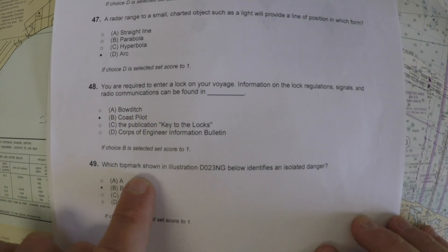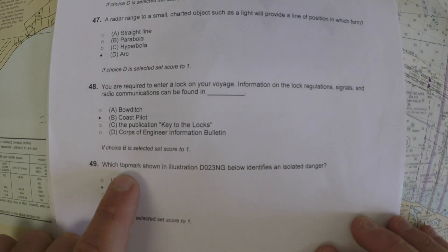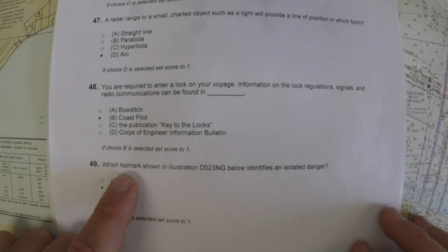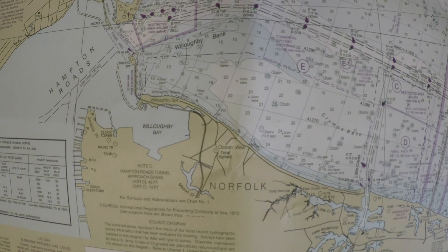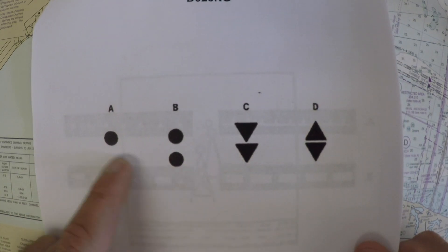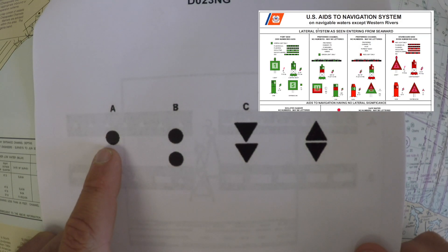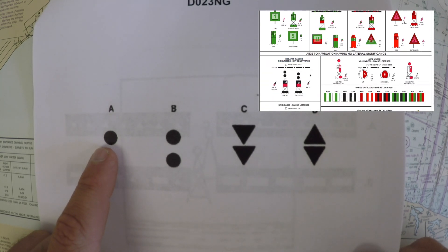Number 49. Which top mark shown in the illustration identifies an isolated danger? Top marks are things that go on top of buoys to help you have a shape to go along with the color, numbers, and everything. Looking at the illustration in the exam, A, B, C, and D are our choices. Choice A goes with a safe water buoy — the single sphere correlates to the red and white sea buoy, the safe water buoy.